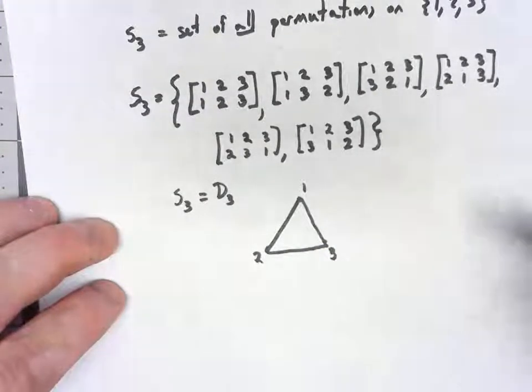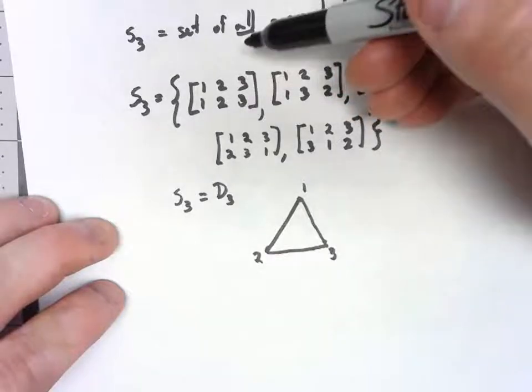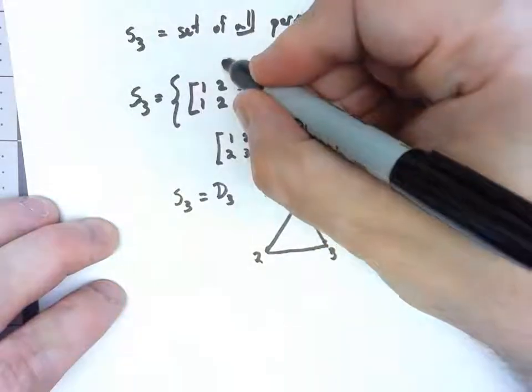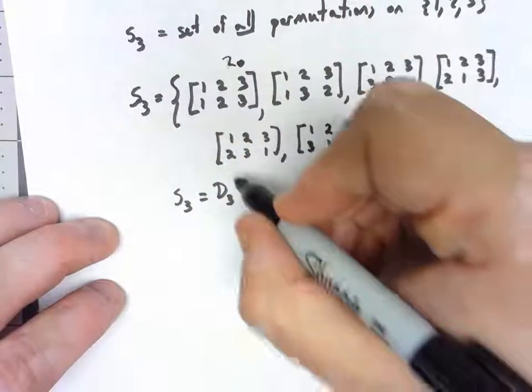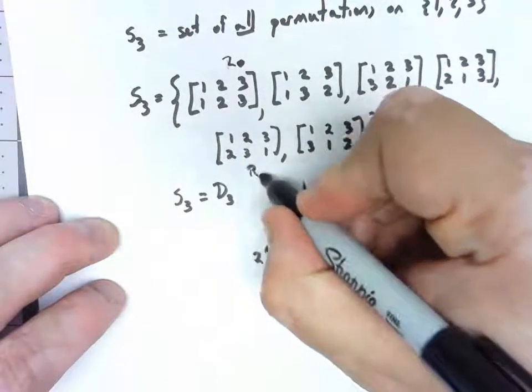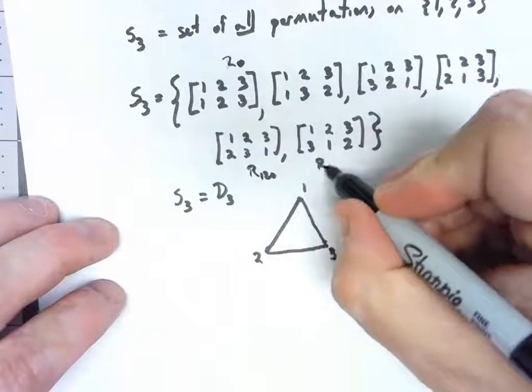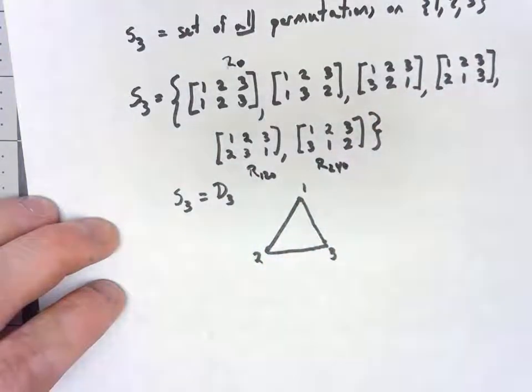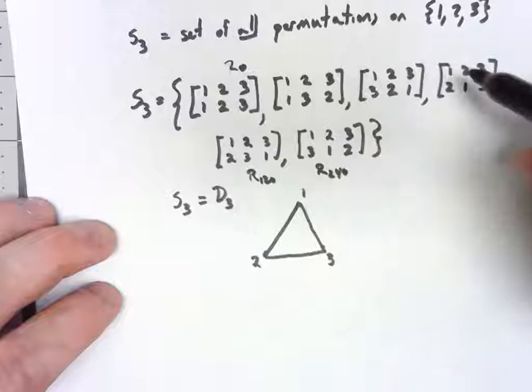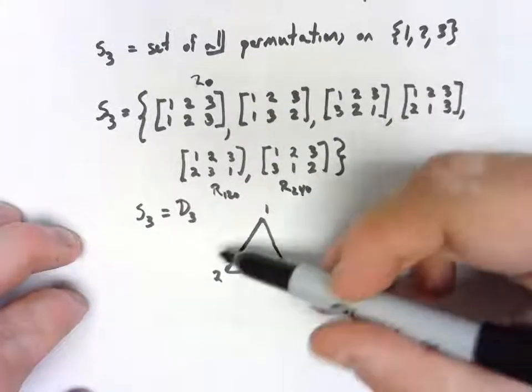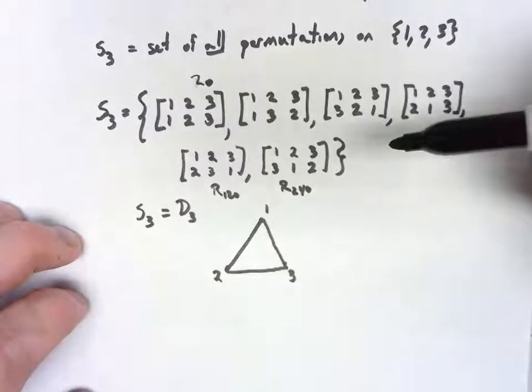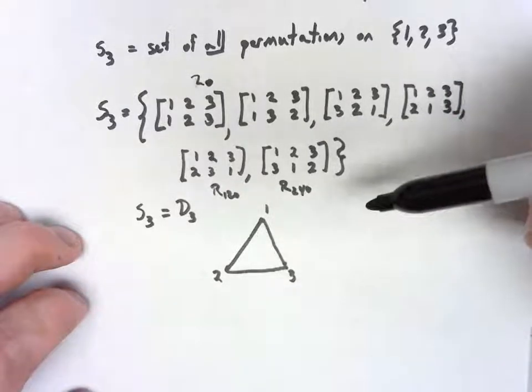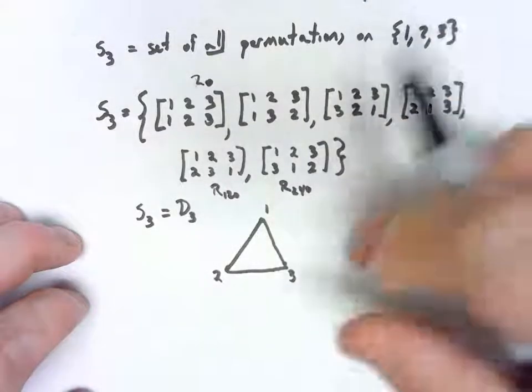If you think it through, the identity would be like R0. These two down here would be like R120 and R240. These, where one thing is fixed and the other two flips, these are all different types of reflections on there. So these two groups are the same group.